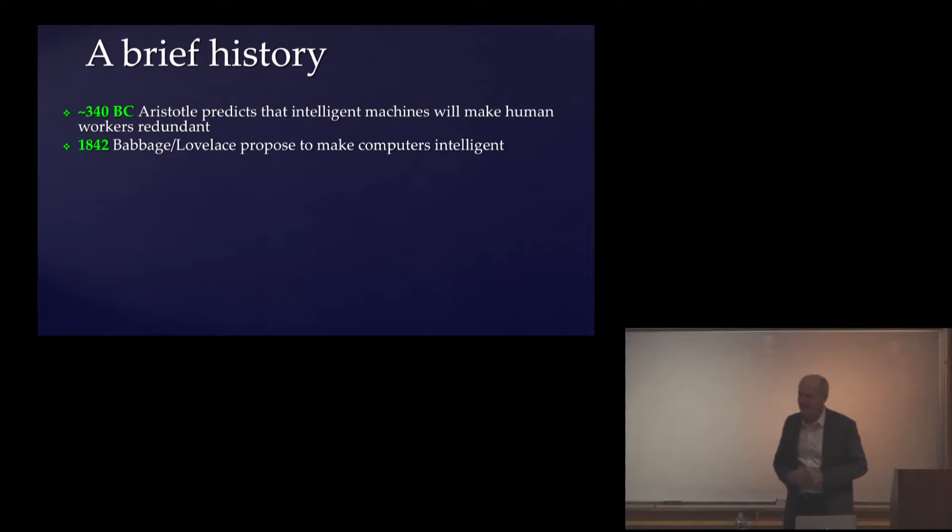But news of the invention and predictions got out there into the wide world, and actually there was a religious newspaper in Illinois called the Primitive Expounder, and the editor of that newspaper got wind of what Babbage was talking about and predicted that if such machines were built, they would eventually take over the world.